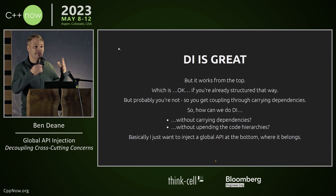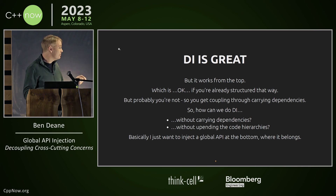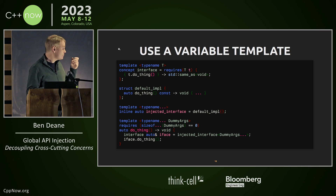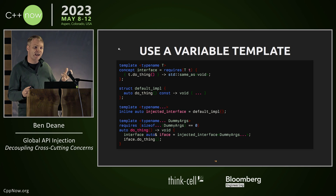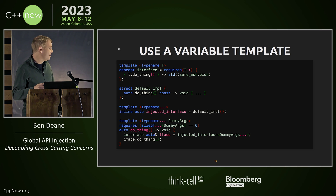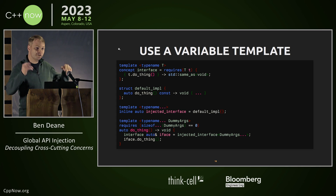The alternative is just upending the code hierarchy, which you often can't do. I wanted to inject a global API at the bottom where it belongs. So what did I do? I used a variable template. The only thing that C++ has that can do this is a template where I can define the base template as the injected interface, and I'm defining it with a pack. And then the function at the bottom — that's my global function in my interface.